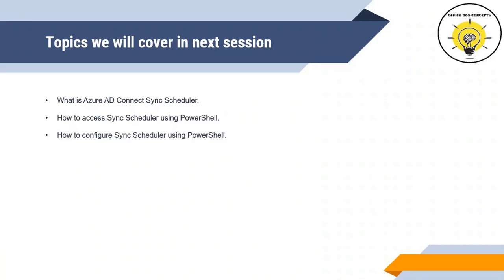In the next video, I will be discussing what Azure AD Connect sync scheduler is and what it does. I will show you how to access the sync scheduler using PowerShell commands, explain all scheduler attributes, and show you practically how to modify them. If you have learned something new from this video, please write in the comments and subscribe to the channel. If you have any questions, feel free to write in the comments — I will be happy to answer. Thank you guys, take care.